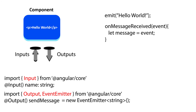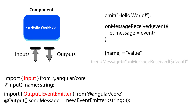We learned that if we want to access an input, we can use the square bracket syntax and provide the input we want to access inside, then assign the value we want to insert. We also learned that if we want to access output events, we use parentheses and provide the event we want to access, then assign a handler function to handle the event.